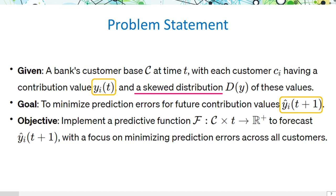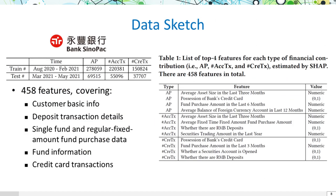We're looking at a customer base of a bank at a given time, where each customer has a measurable contribution value. This value follows a skewed distribution. Our aim is to develop a model that predicts future contributions. We utilize data from Bank Sinopak, a leading bank in Taiwan, with 458 features across customer demographics, transactions, fund purchases, and credit card usage, split by time for model training and testing.